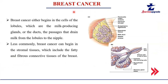Now coming to our main topic: what exactly is breast cancer? Before talking about cancer in breast cells, let's look at how a breast cell looks. There are two main components in a breast: the lobules, which are the violet-colored structures where milk is produced, and the ducts, which are passage-like structures that collect milk produced in the glands and eject it out.